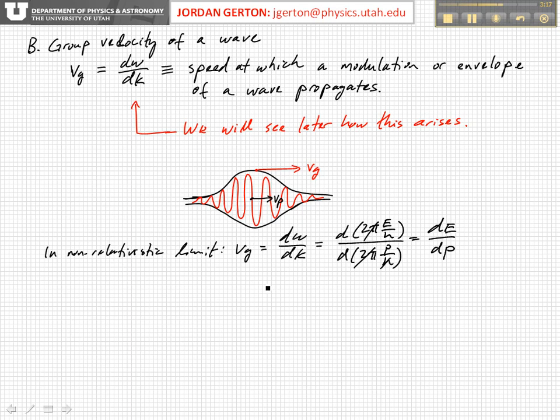And this is equal to, if we use the classical expressions for kinetic energy and momentum in particular, we can write that the kinetic energy, or E, is equal to p²/2m classically. And so that means that the group velocity is equal to d(p²/2m)/dp, which is just 2p/2m, which is equal to p/m, and that, of course, is equal to v, because p = mv. And so classically, we see that the group velocity is, in fact, equal to the velocity of the particle.